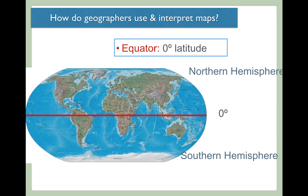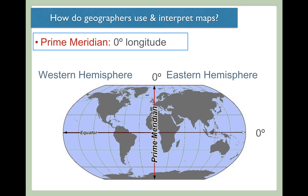The prime meridian divides the Earth into the western hemisphere and the eastern hemisphere. The prime meridian runs through zero degrees longitude. It also runs directly through a town called Greenwich in England. Sometimes you will hear references to Greenwich Mean Time, and that's a reference to the time at zero degrees longitude, which is the prime meridian. We're going to come back to the idea of time momentarily.